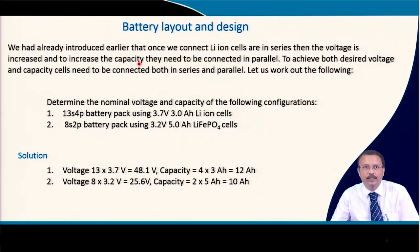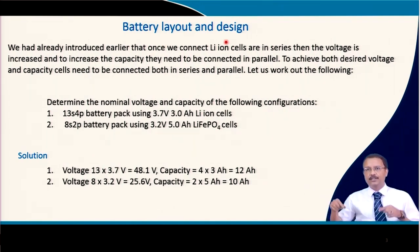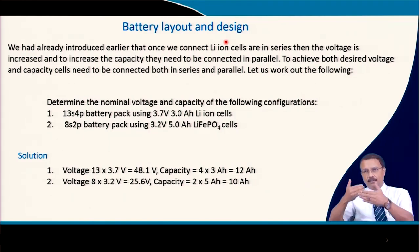We have already discussed that when lithium-ion cells are connected in series the voltage increases, and to increase the capacity they need to be connected in parallel. To achieve both desired voltage and capacity, cells need to be connected both in series and parallel. You should have a matrix of cells connected in series — meaning positive connected to negative — and also in parallel, where positive and positive connections are joined together.